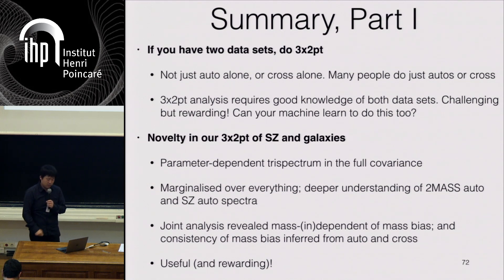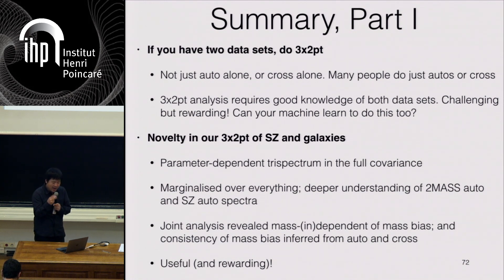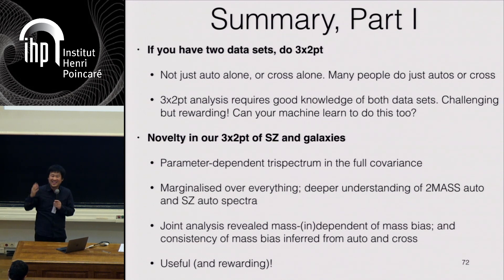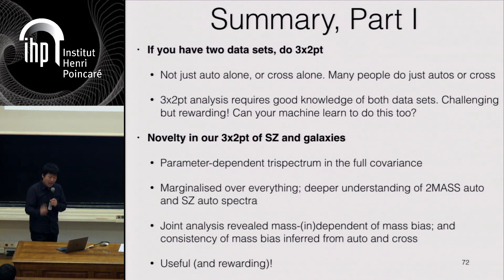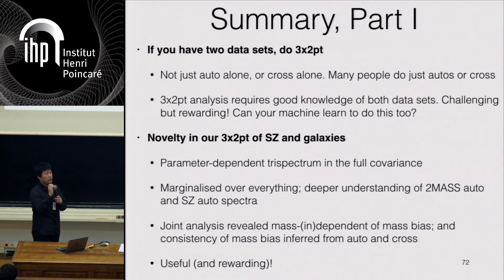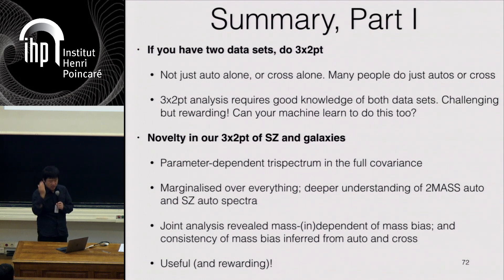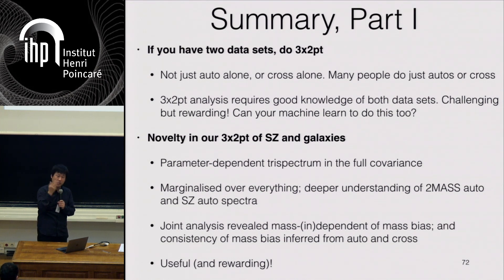When you have two datasets, just do 3x2pt. It's hard, but it's worth it. It requires good knowledge of both datasets, but that's the era we are in — you can't just be expert on one thing. Look for other datasets, be familiar with them, do the analysis properly, and you learn something you didn't before. In machine learning sessions, we didn't really hear much about cross-correlation. But when you do pattern recognition or try to figure out correlated patterns, cross-correlation is a natural step. There's a lot to be gained from teaching machines to include cross-correlation information as well.